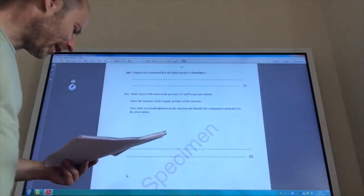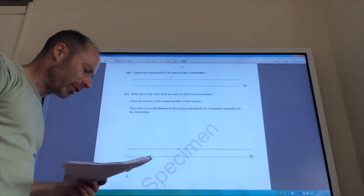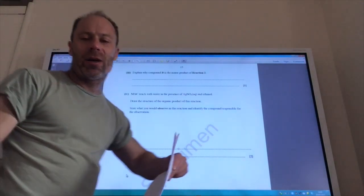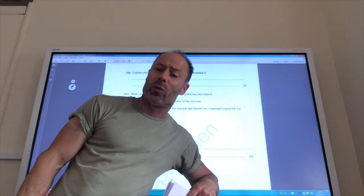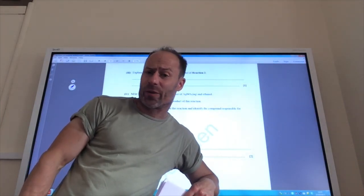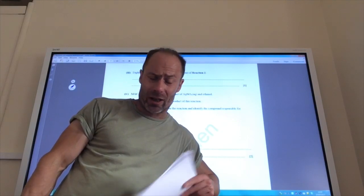Explain why compound B is a minor product. Well, it's because the intermediate carbocation is less stable, because in the one that we've just done, you formed a tertiary carbocation, which is much more stable than a primary carbocation.